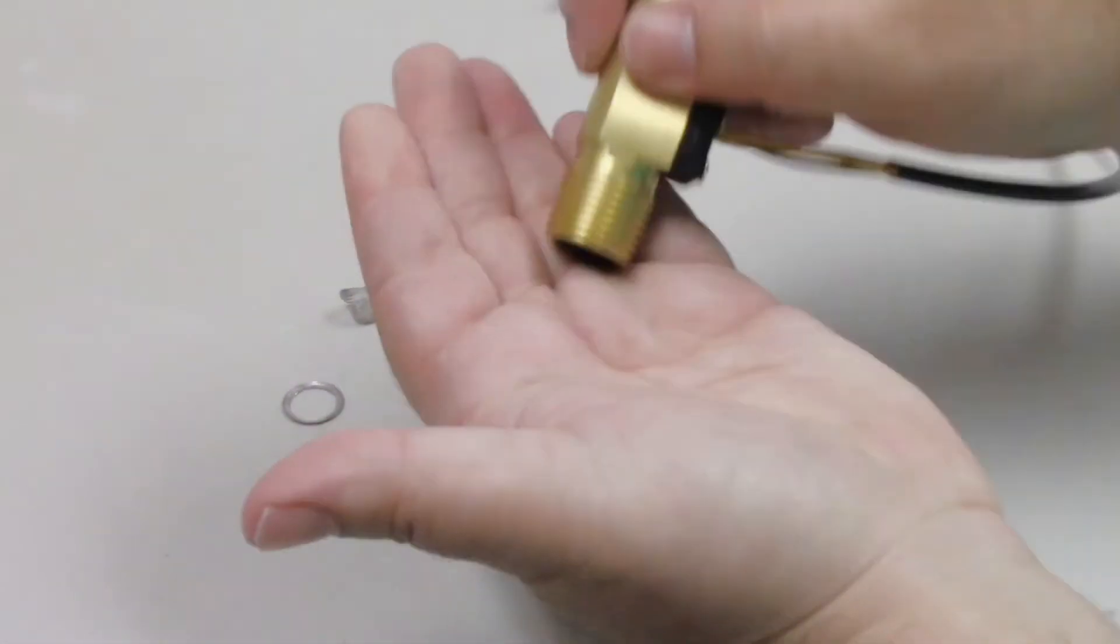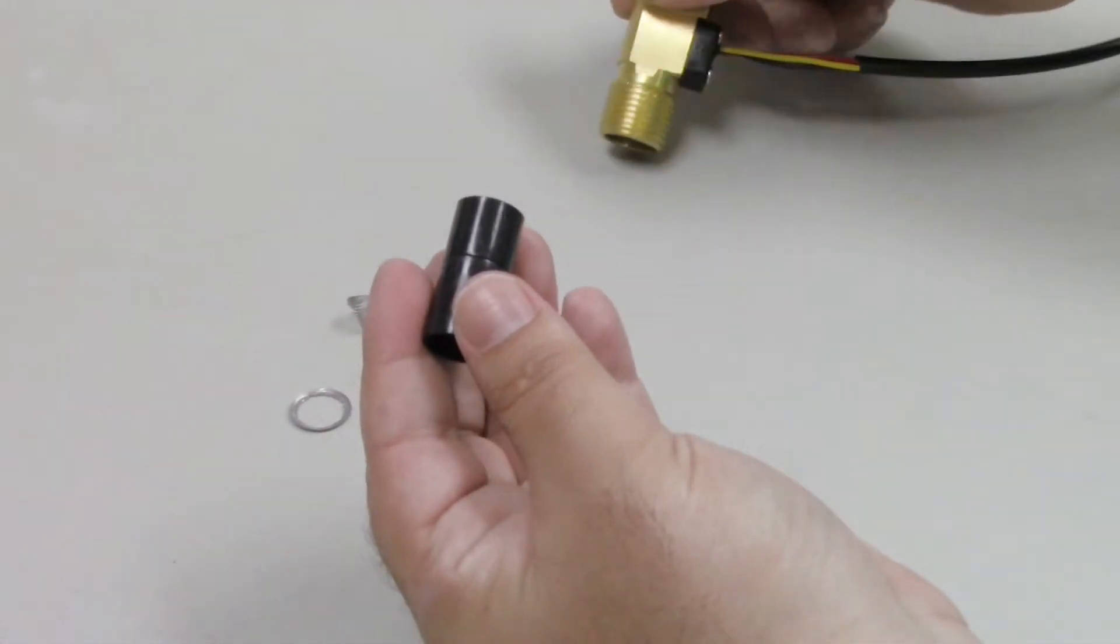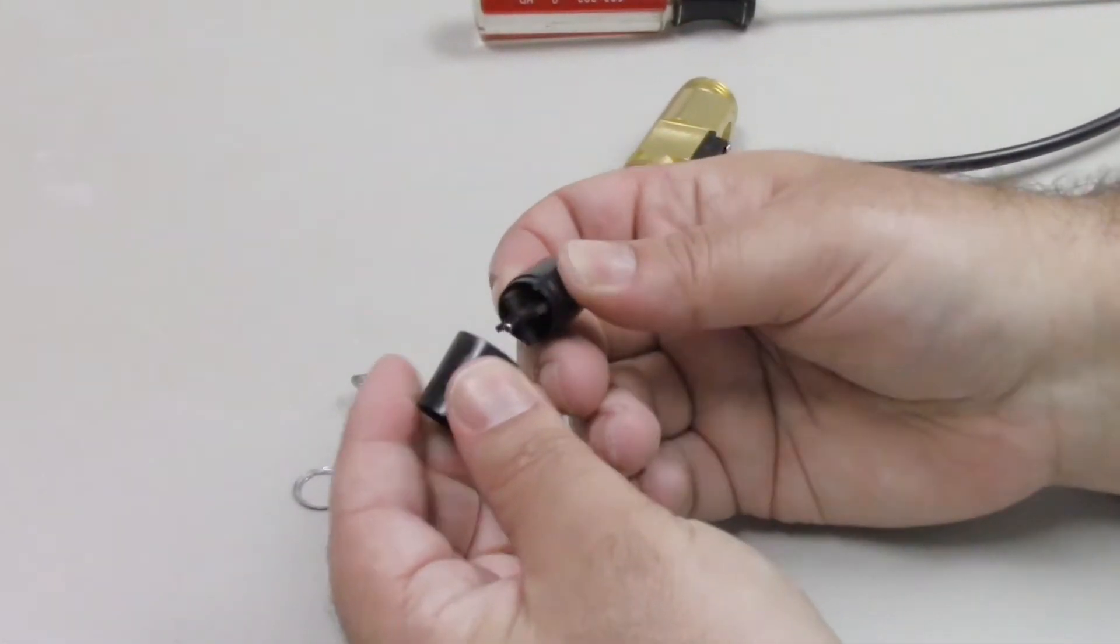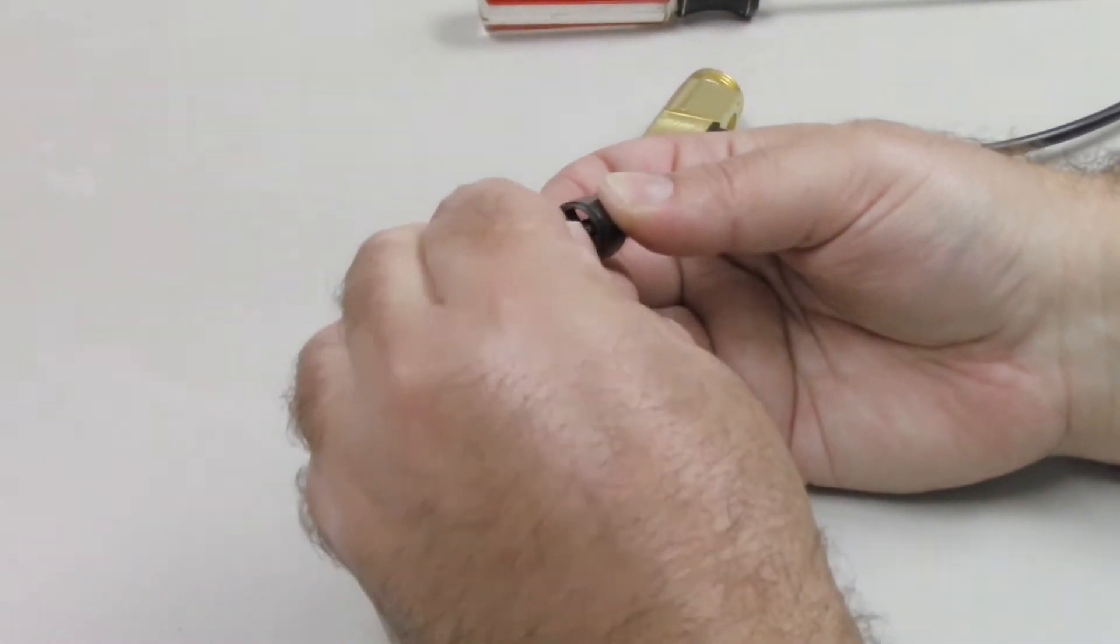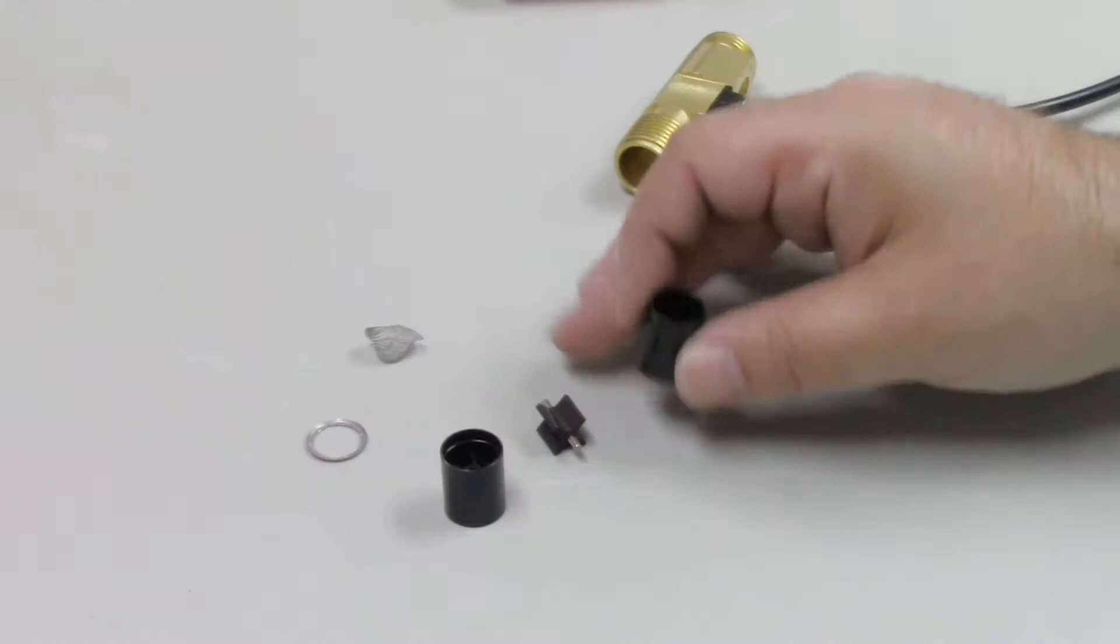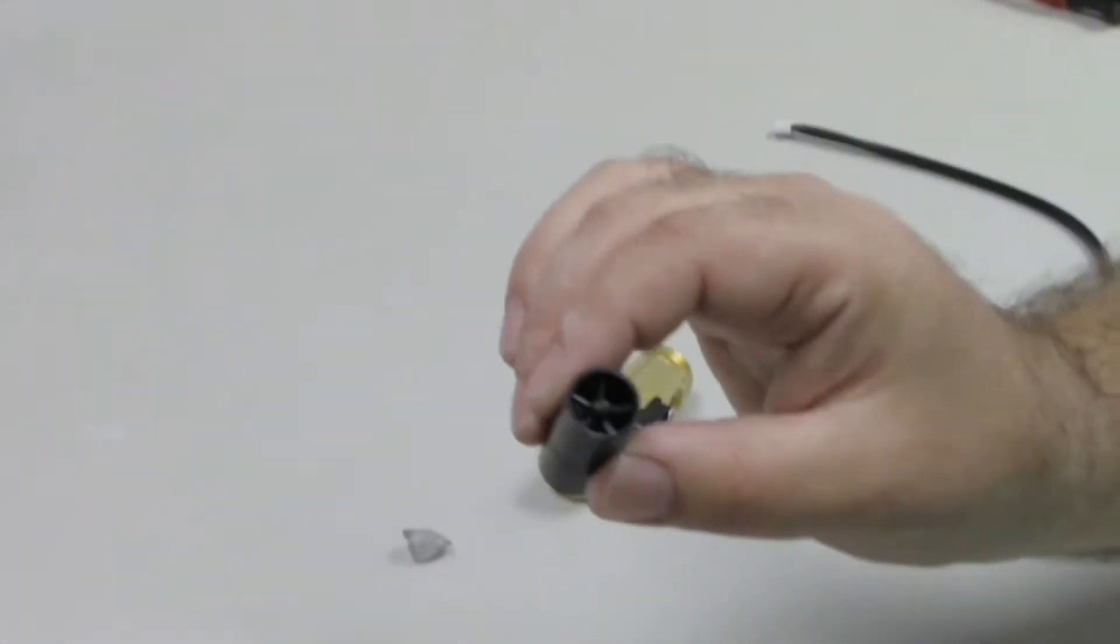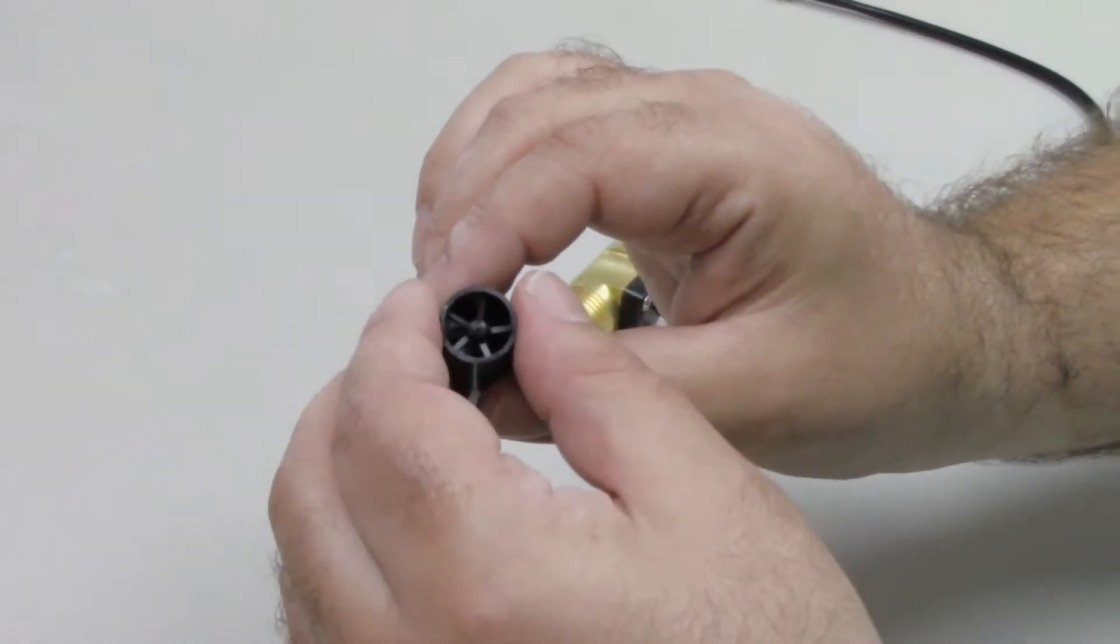Once the washer and mesh have been removed, we will remove the flow switch to check for any residue or buildup. After we check for residue, make sure the flow switch spins freely by blowing into the flow switch casing.